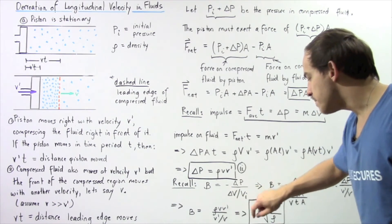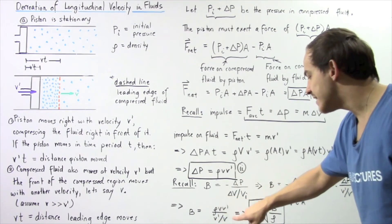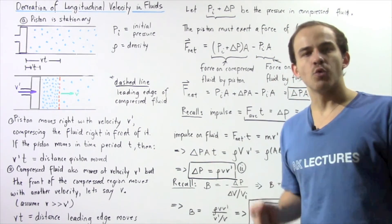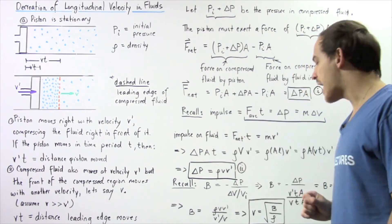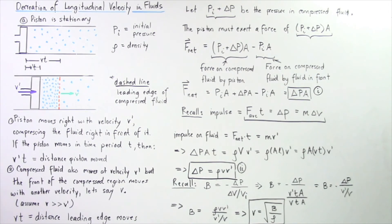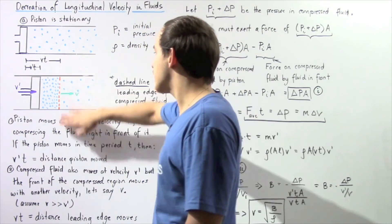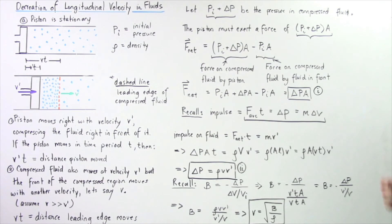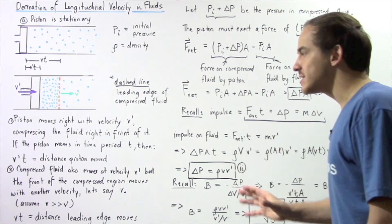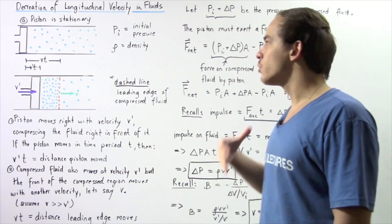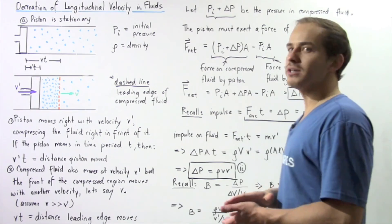Rearranging and solving for the velocity V of the leading edge of the compressed fluid, we find that V equals the square root of the bulk modulus divided by the density. This is the equation that gives us the velocity of a longitudinal wave as it travels through a fluid, such as a gas or a liquid.